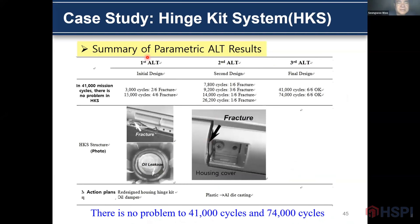This is a summary of the parametric ALT results for the hinge kit system. There was no initial problem. In the first parametric ALT, we found fracture of the housing and leakage of the oil damper. In the second ALT, we found fracture of the housing cover. In the third ALT, there was no problem at 41,000 and 74,000 cycles.